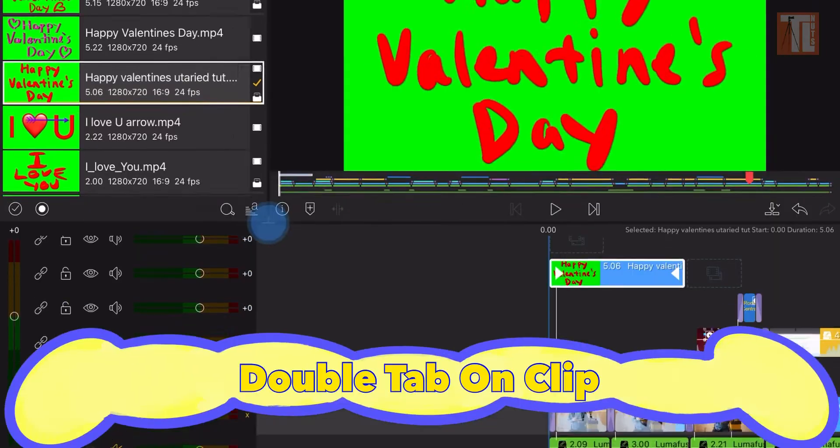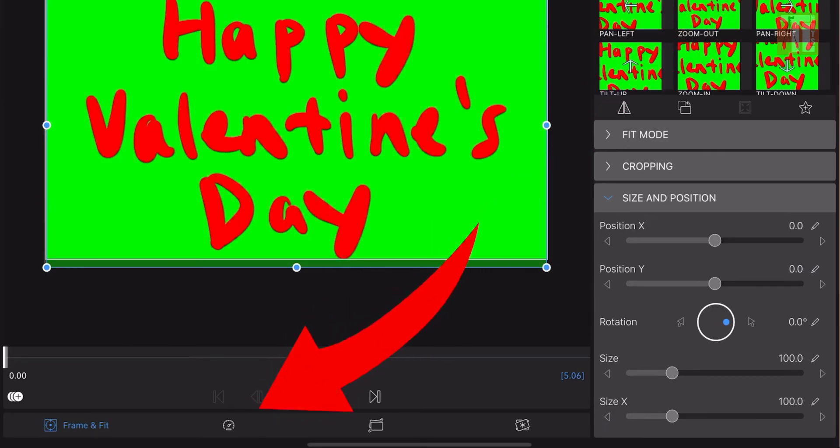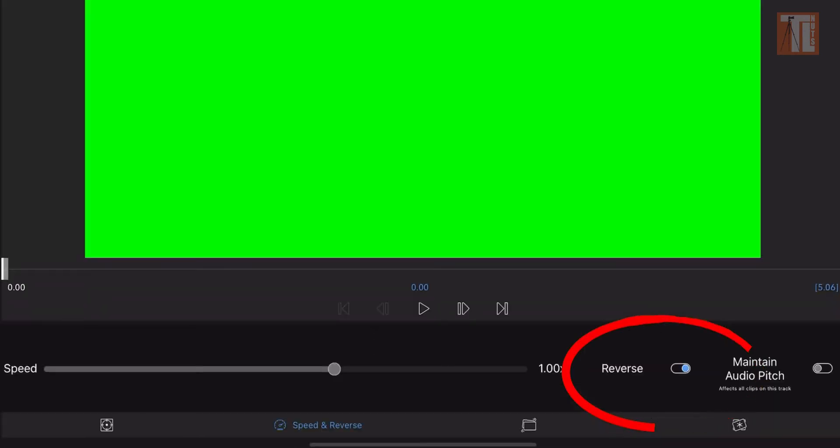Now to make a reverse a video, double tap on the clip. Now go to this button right here which is speed and reverse, click on the reverse button.